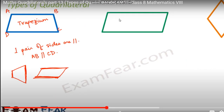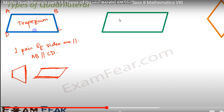The first type is the trapezium. A trapezium is a type of quadrilateral. We name its corners, that means vertices, as A, B, C, and D. The condition for a trapezium is that one pair of sides are parallel. It contains four sides and any two sides are parallel. For example, in this figure AB is parallel to CD.